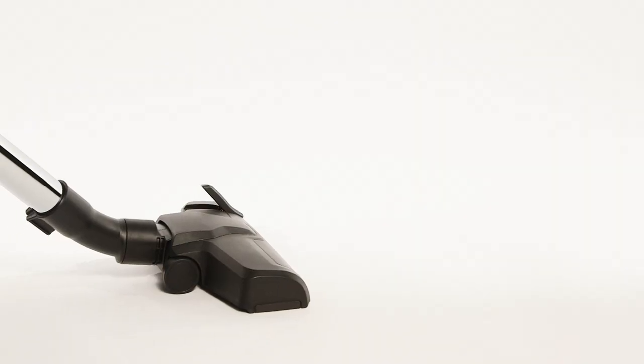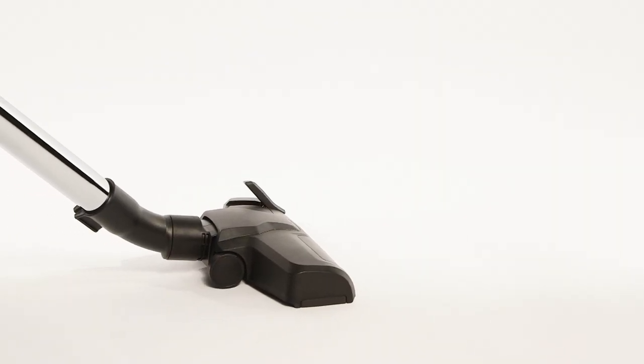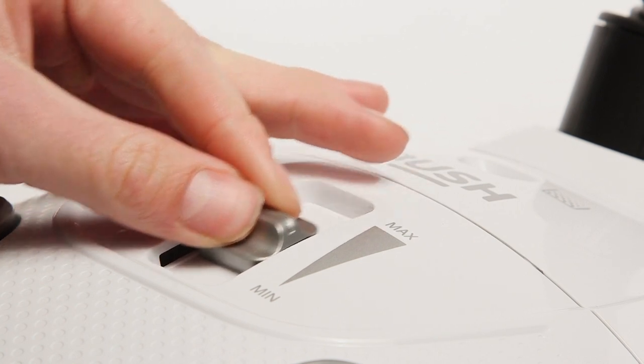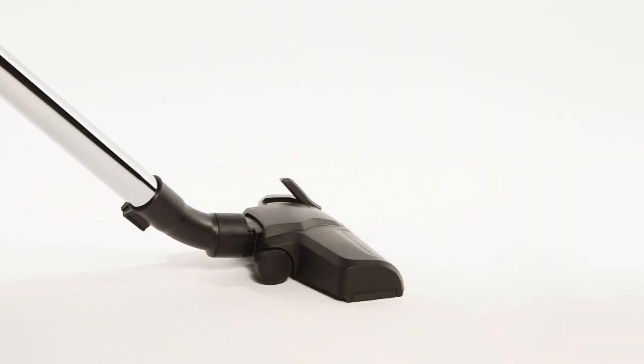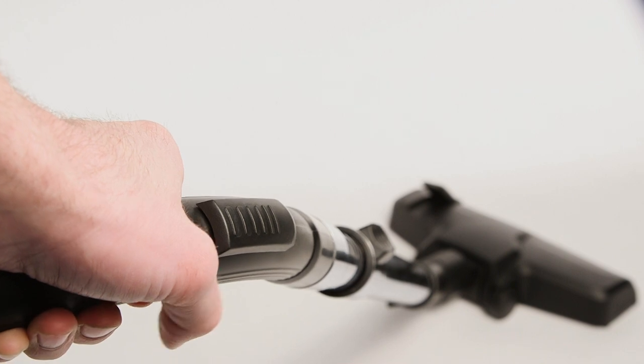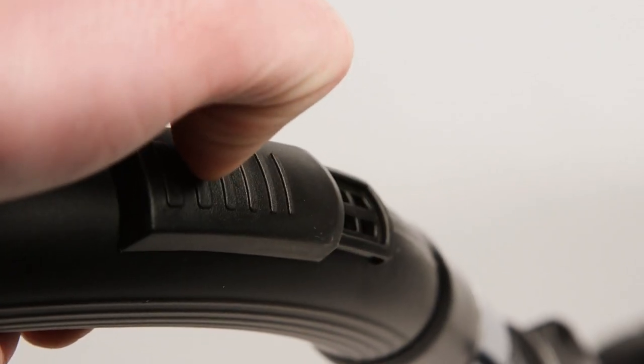If you are finding that your vacuum is not moving across the floor smoothly, you can reduce the suction power on the vacuum body. Additionally, you can open the airflow regulator on the hose handle to reduce the suction.